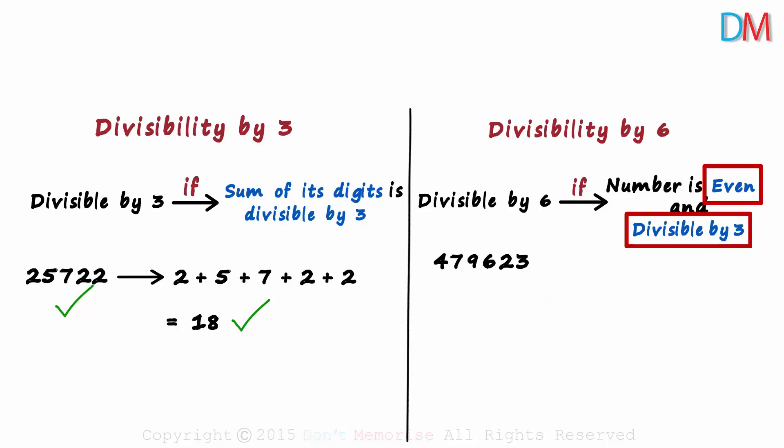Even if one of them is not satisfied, the number will not be divisible by 6. Here it's not even and hence will not be divisible by 6.